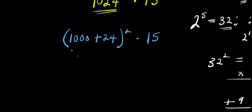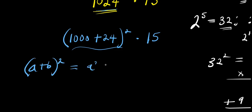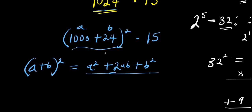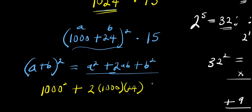So, from here, how do we expand this? If you have (a + b) raised to the power of 2, this equals a squared plus 2ab plus b squared. And in this case, 1000 is our a and 24 is our b. So, I am going to have 1000 squared plus 2 times 1000 times 24 plus 24 squared.